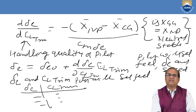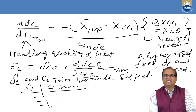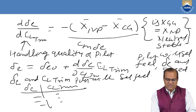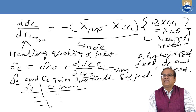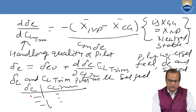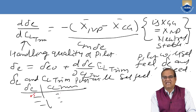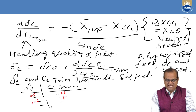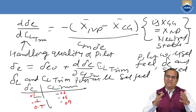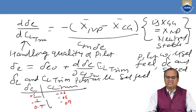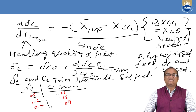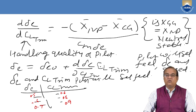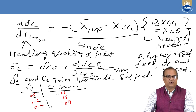So d(delta_E)/d(CL_trim) gives the handling quality of the pilot — how nicely the aircraft is handled, how the pilot gets the feel of the aircraft. As delta_E varies (0.5, 0.6, 0.8, etc.), the pilot gets a feel of the CL experienced by the aircraft. We have now progressed from stability to control to handling quality of the aircraft.